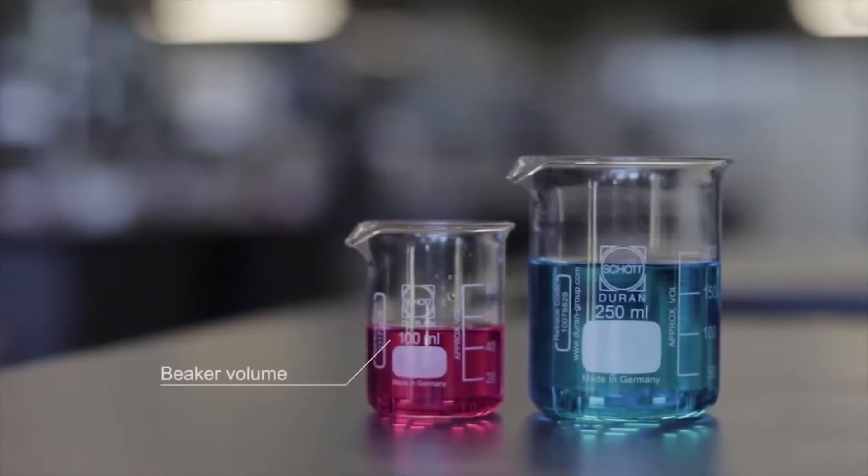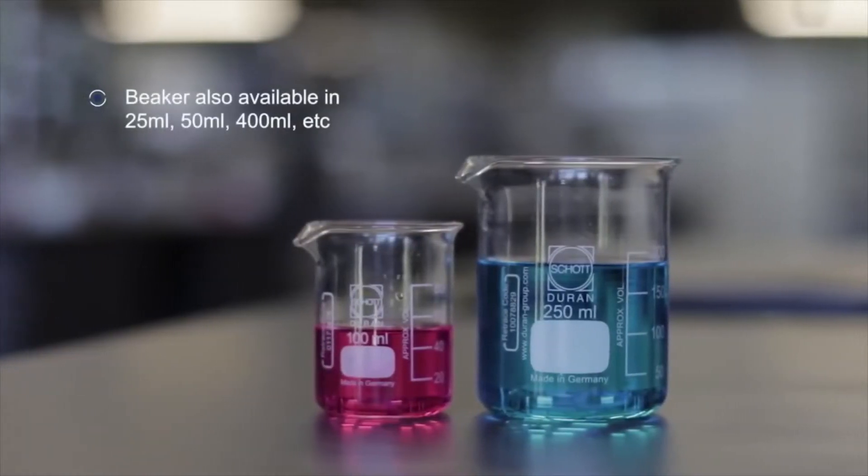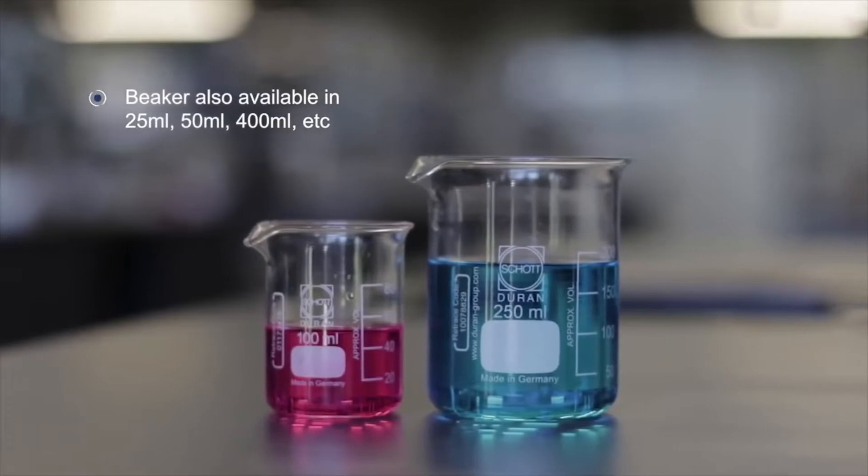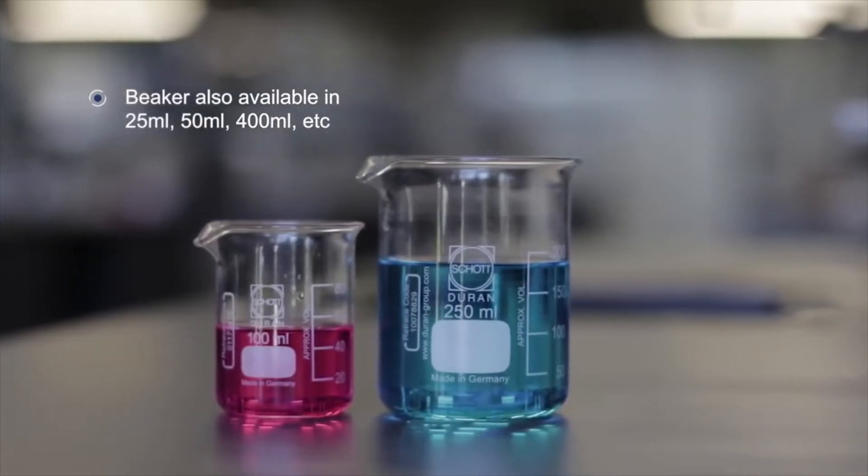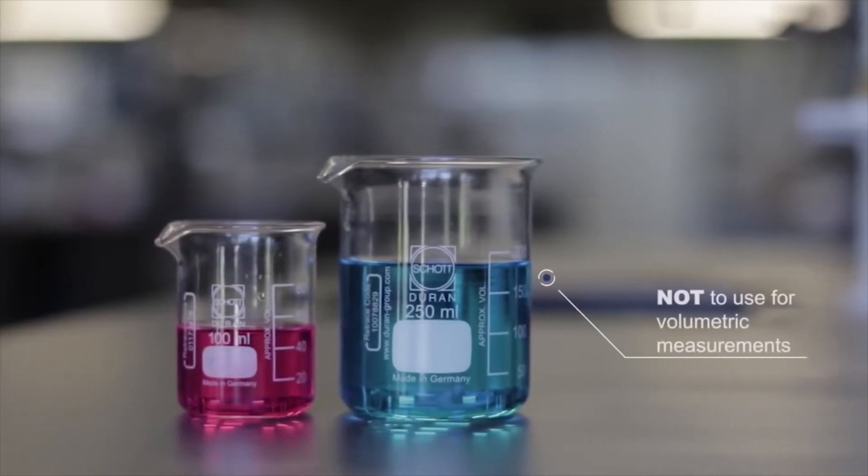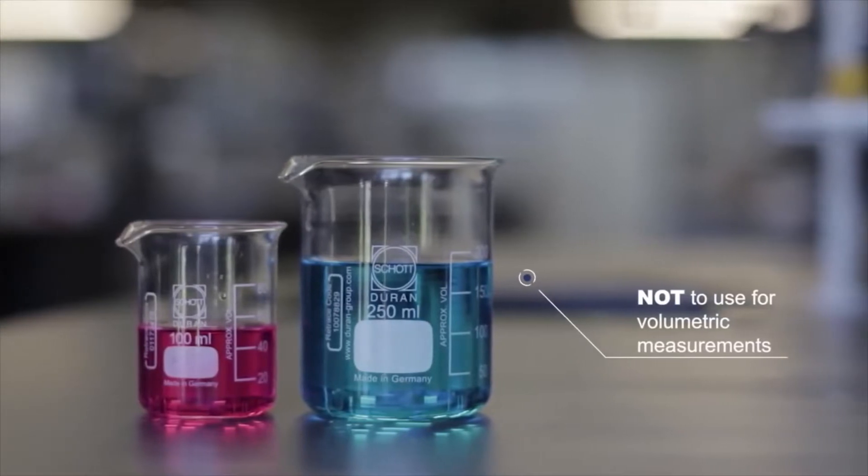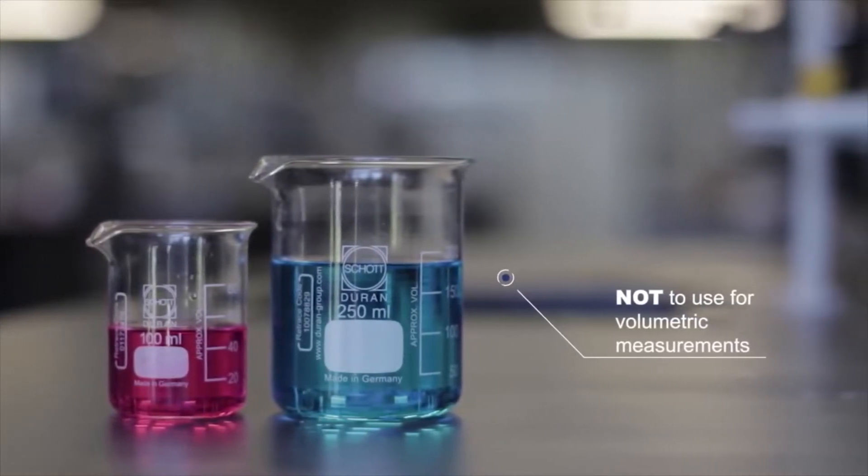A beaker has a cylindrical shape with a flat bottom and is available in a wide range of sizes. A beaker is used for stirring, mixing or heating liquids and is not used for precise measurements.